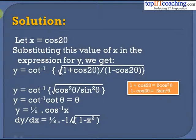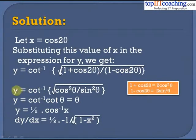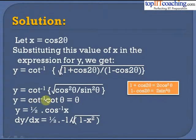Substituting x = cos 2θ into y gives y = cot⁻¹(√((1+cos2θ)/(1−cos2θ))). Using the trigonometric identities 1+cos2θ = 2cos²θ and 1−cos2θ = 2sin²θ, we get y = cot⁻¹(√(cos²θ/sin²θ)) = cot⁻¹(cotθ) = θ.